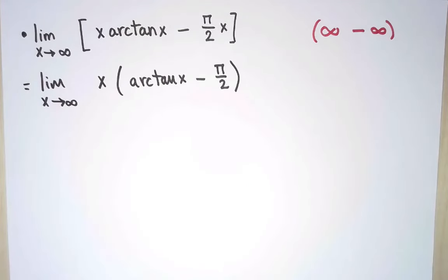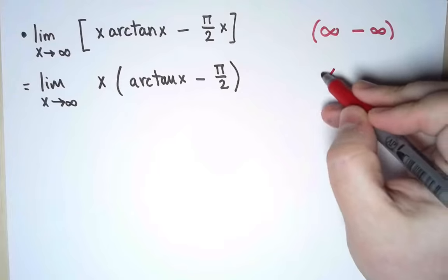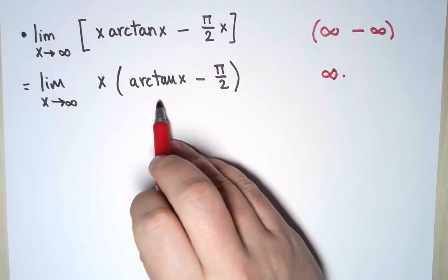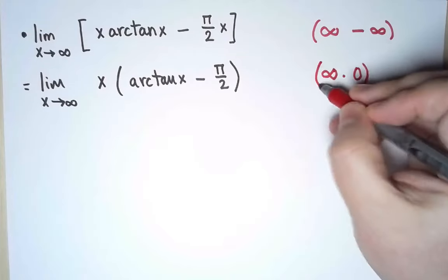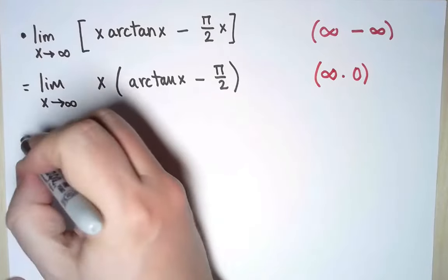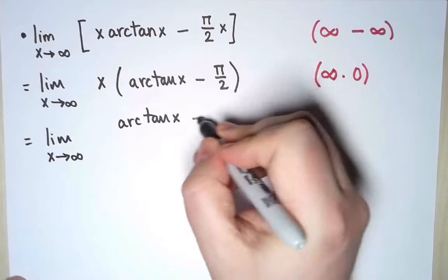Now I have the product of two things. The limit of the first term of x is infinity. The limit of the second term, well, this has limit π over 2 minus π over 2. That's zero. Okay, that's also an indeterminate form, but it's a product. And I know I can transform every product into a quotient.